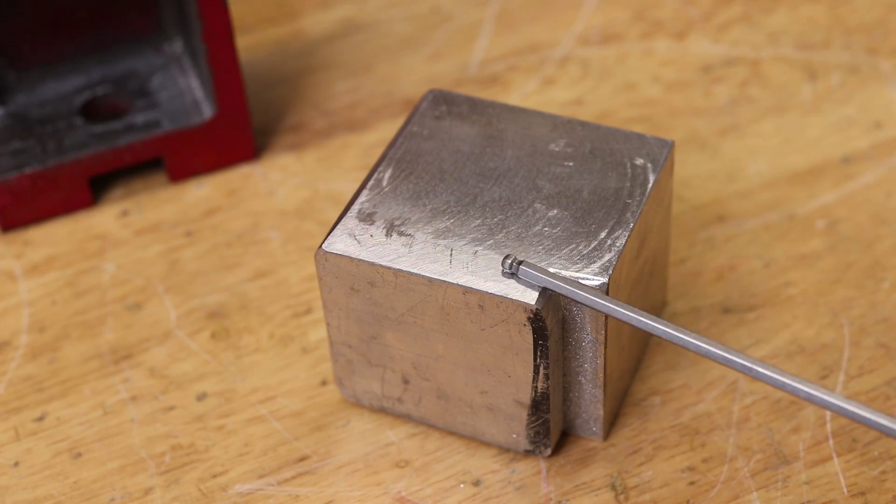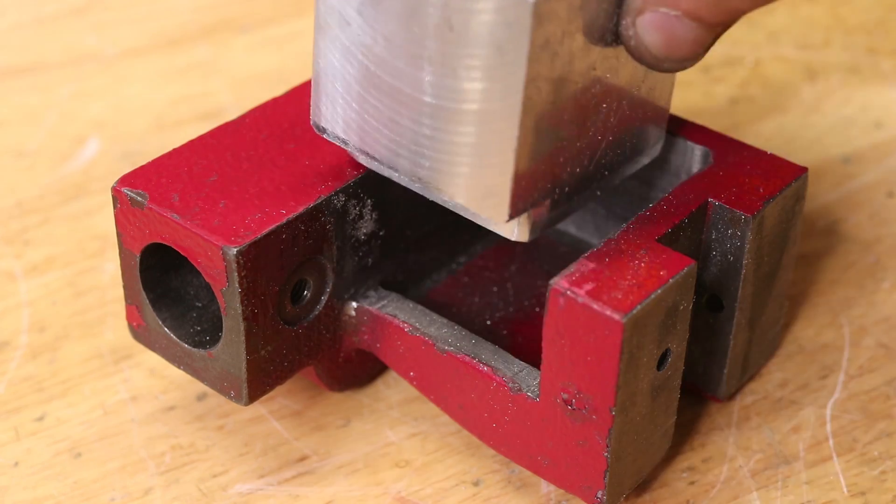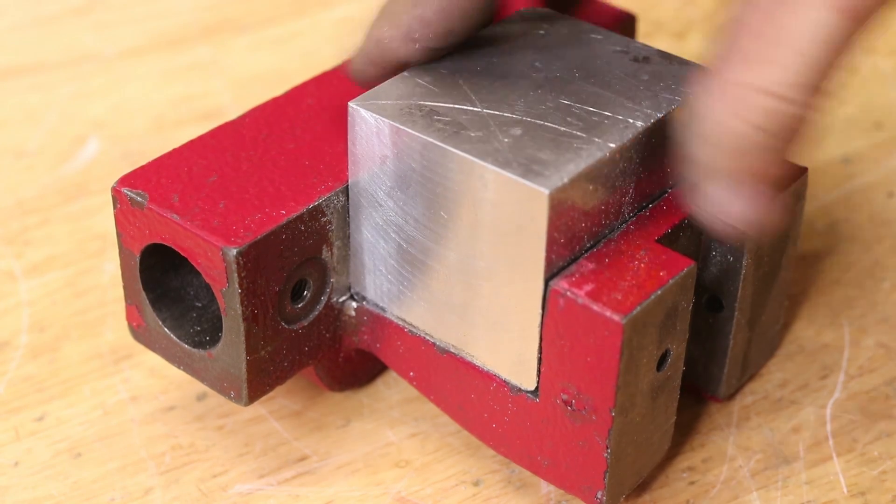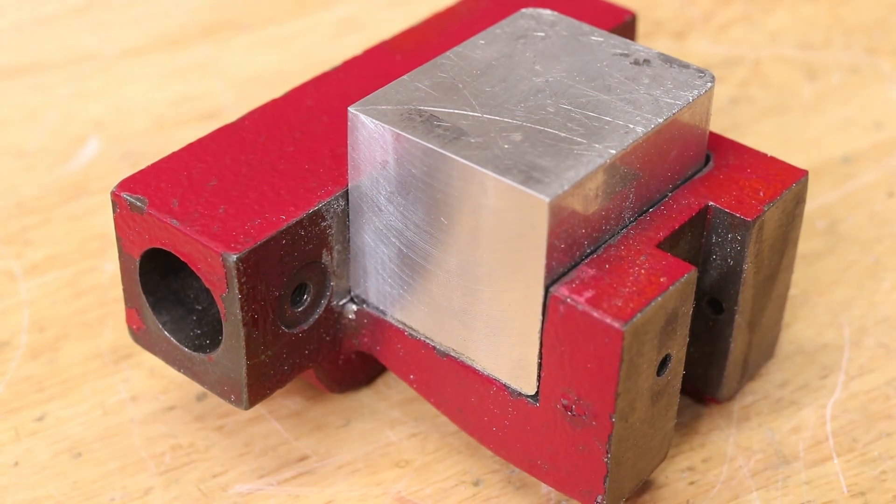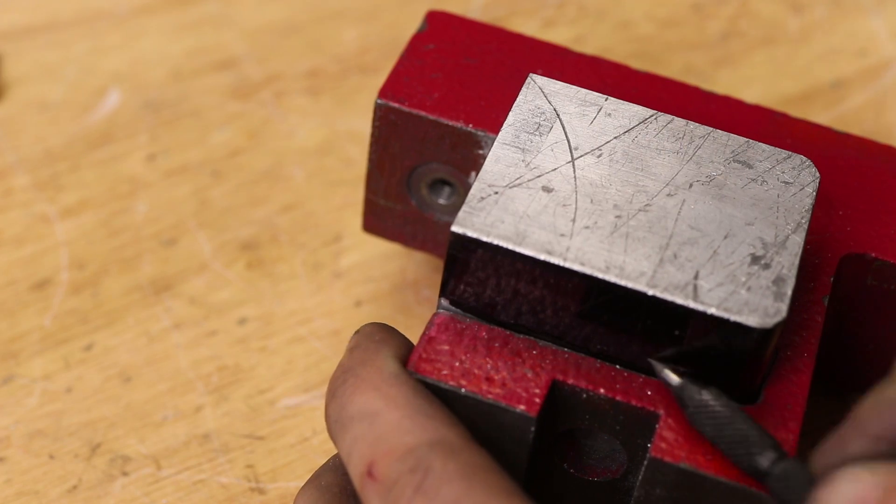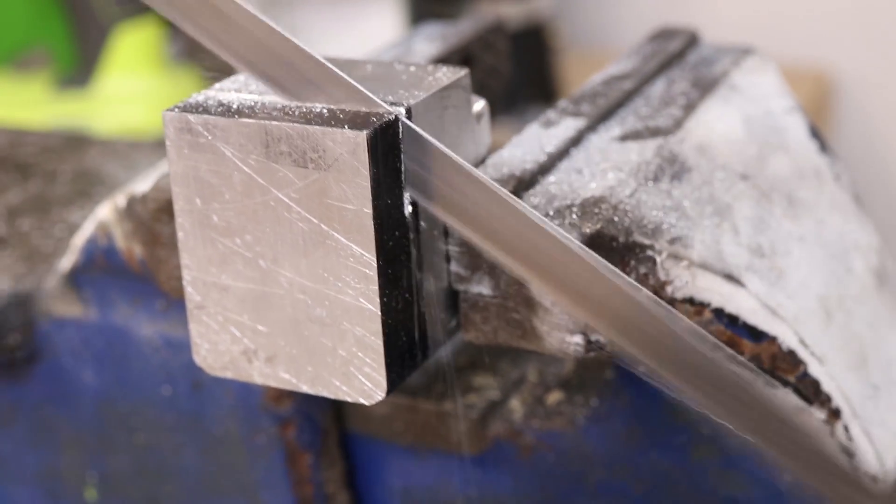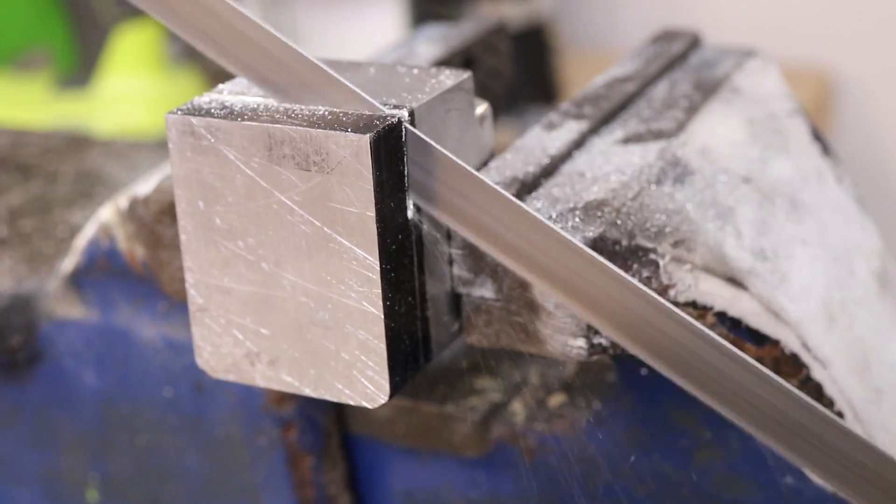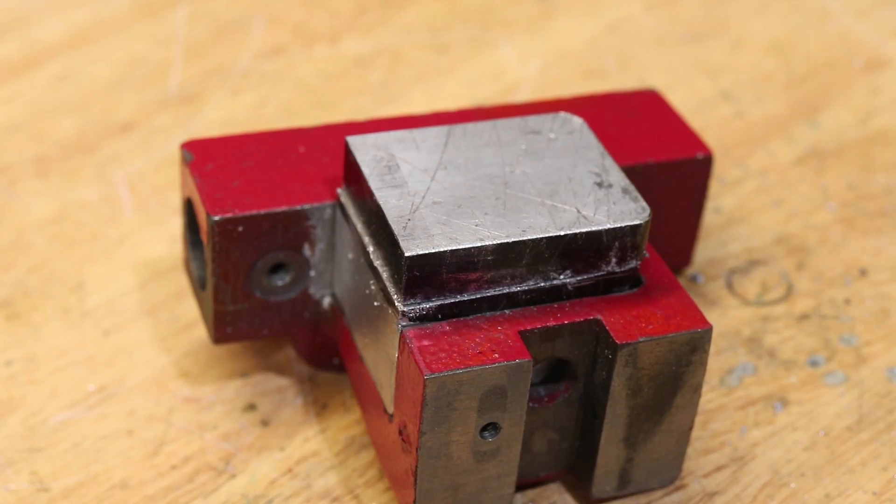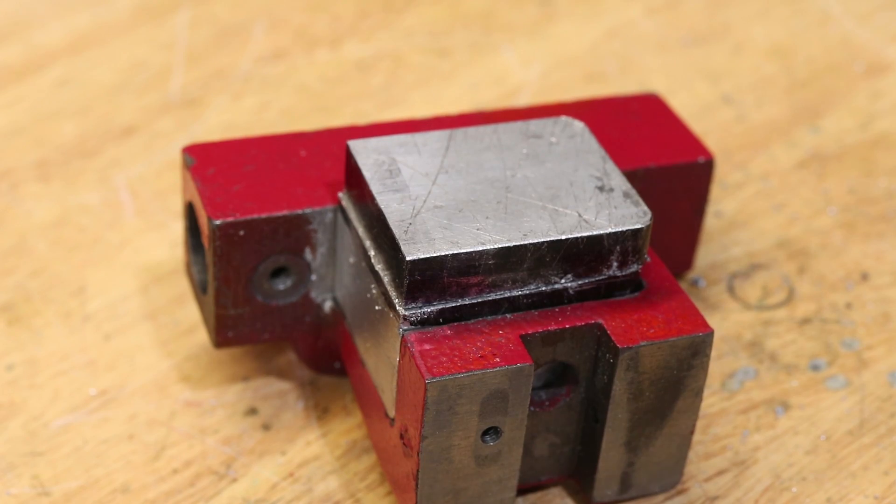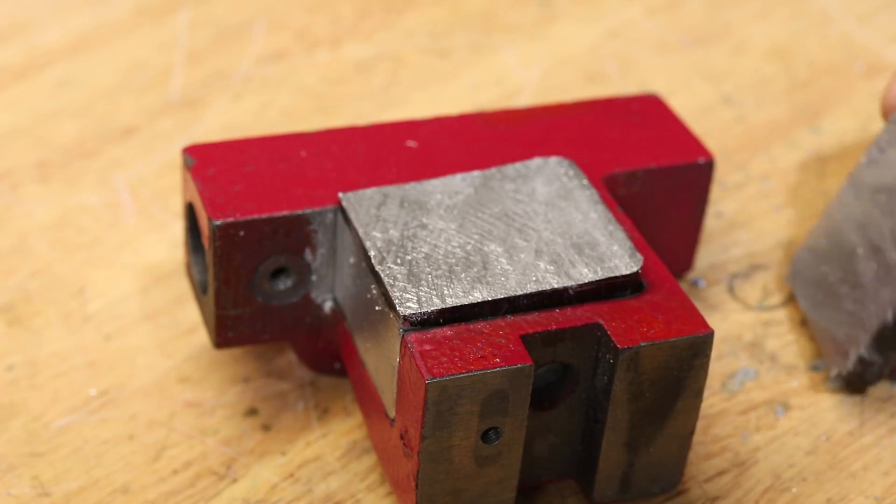The part needed a bit of filing on one side but the final fit was really decent. There's about 12mm of excess stick out so I'll cut most of it away using the hacksaw. The piece is big enough to be used in future projects so there's no need to turn it into chips.